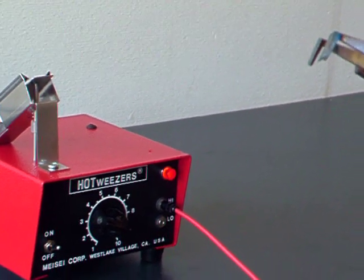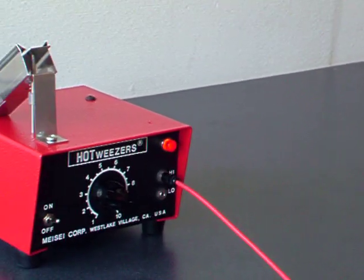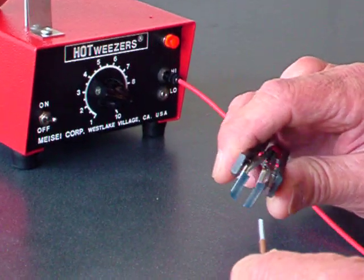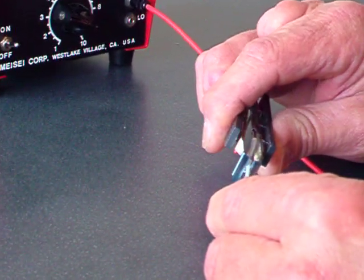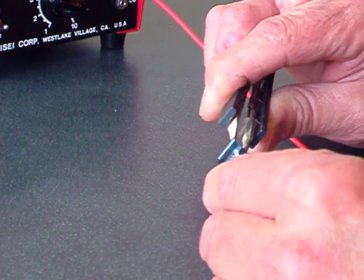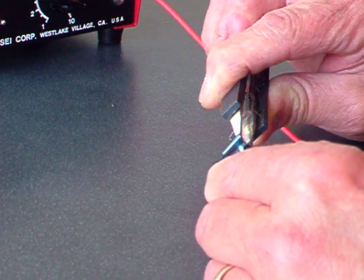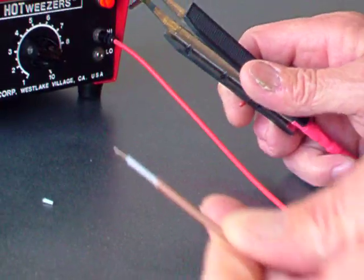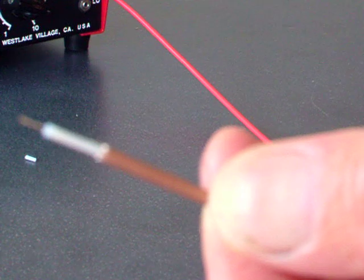Once the Hotweezer is up to temperature, simply take your material, allow it to heat up and then remove the slug. There you see a nice clean strip.